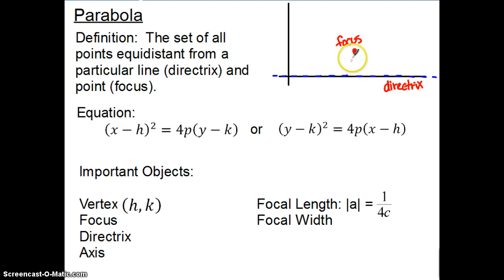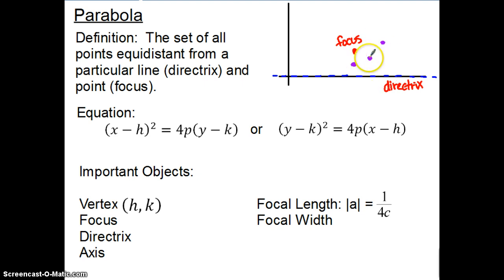So if this is the line and this is the point, in order to be the same distance we would need a point halfway in between the directrix and the focus. If we continued on, these are all points that would be roughly the same distance away from the focus as they are from the directrix. And if we did the same thing on the other side, here is how we get our parabola.